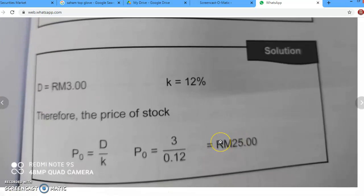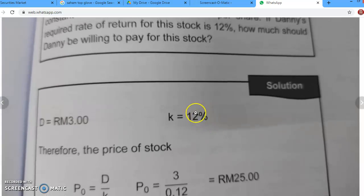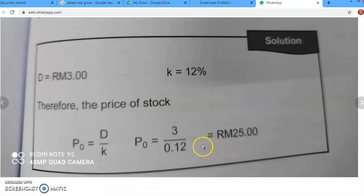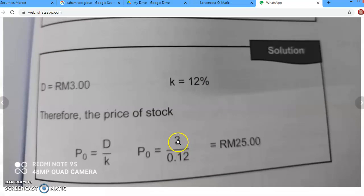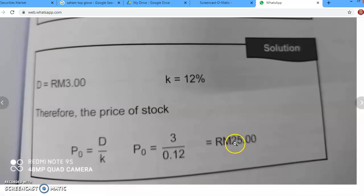So if you divide 3 bahagi dengan 0.12, we will get the price for this stock yang Danny akan purchase ni bernilai sebanyak RM 25. So this is the price that Danny willing to pay if dia punya target rate of return adalah sebanyak 12%. So kalau K dia target 12% dengan dividend yang dibayar RM 3 setahun, so share tu bernilai sebanyak RM 25.